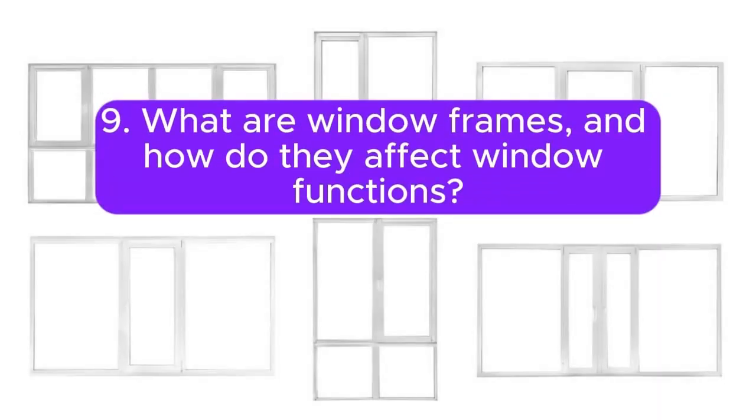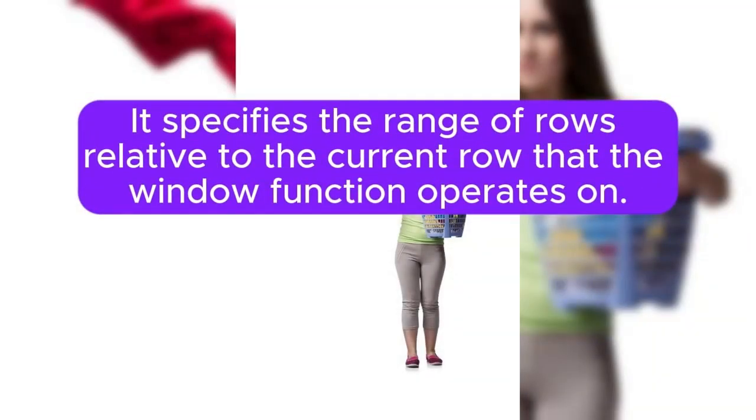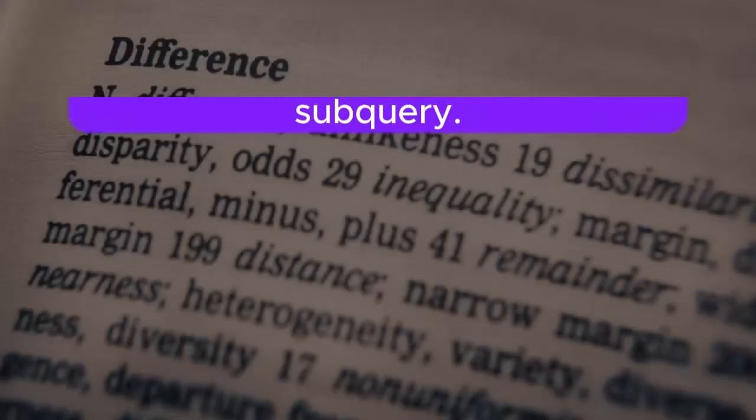Question 9: What are window frames, and how do they affect window functions? Answer: A window frame is a subset of the result set defined by the over clause in window functions. It specifies the range of rows relative to the current row that the window function operates on.